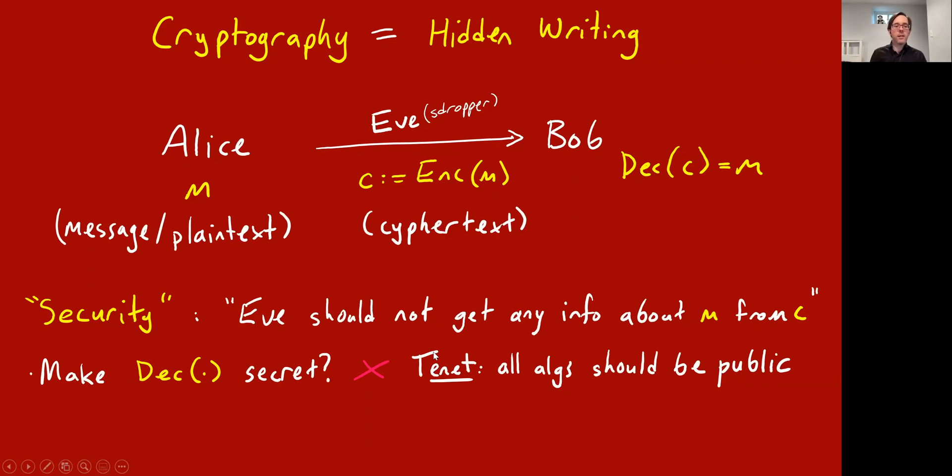A basic tenet in most computational cryptography theory is that all the algorithms involved should be public knowledge to everyone. Given that, if the decryption algorithm and the encryption algorithm are publicly known algorithms, what's to stop Eve from running the decryption algorithm on the ciphertext? But the way we get around that is to still have some secret things, but these will be secret inputs to the publicly understood algorithms.